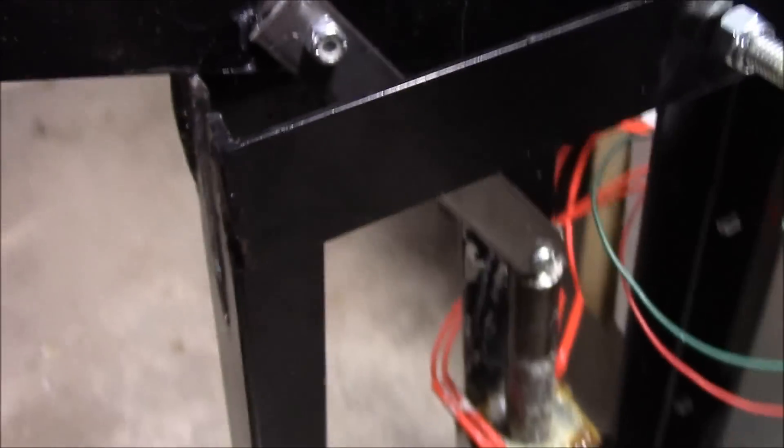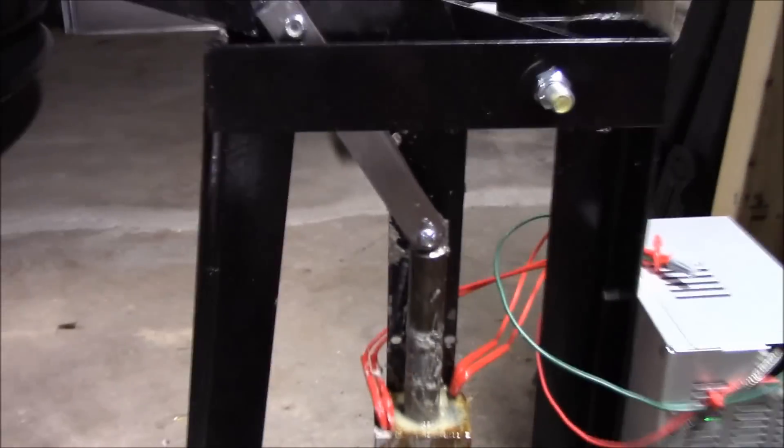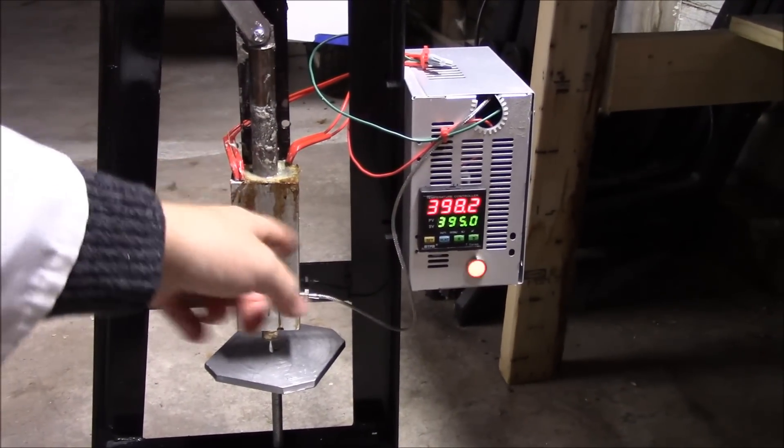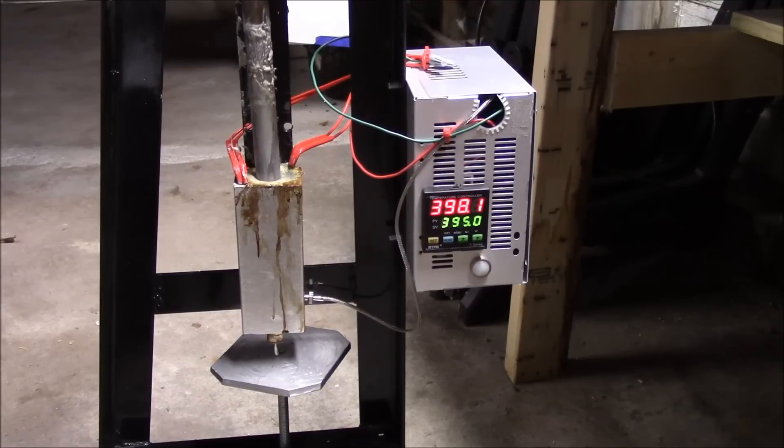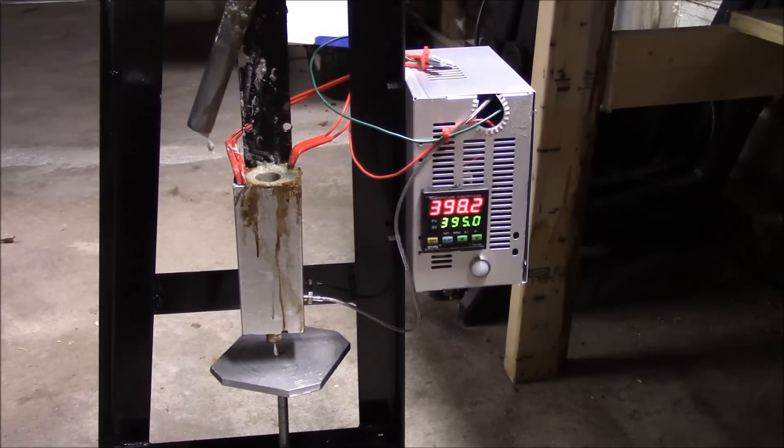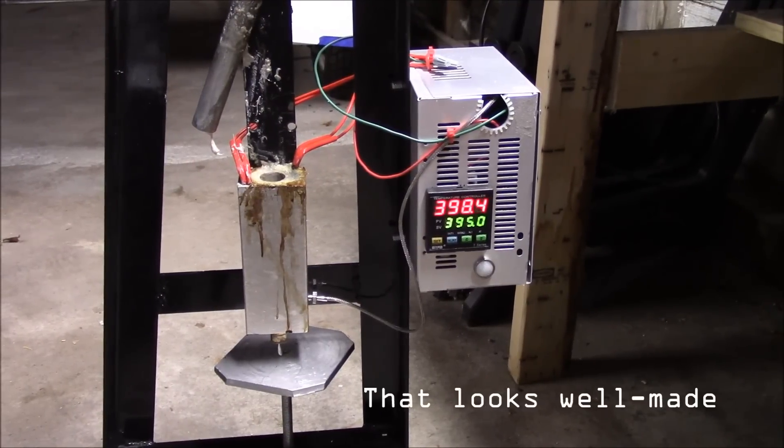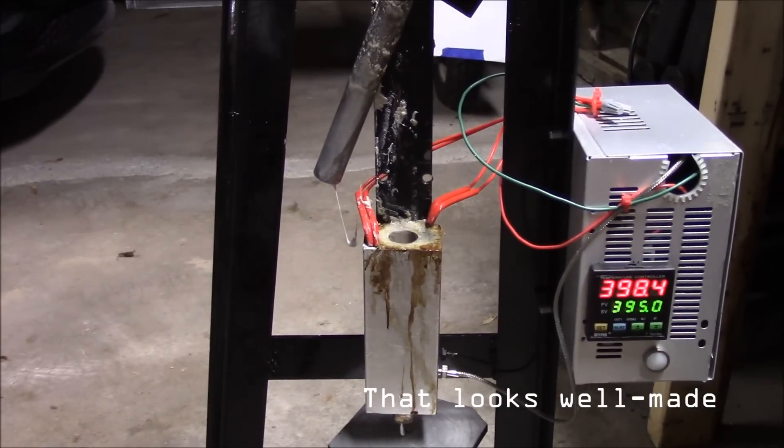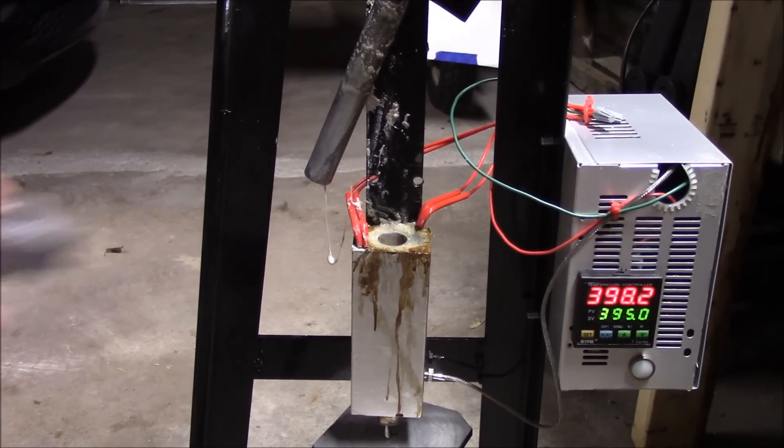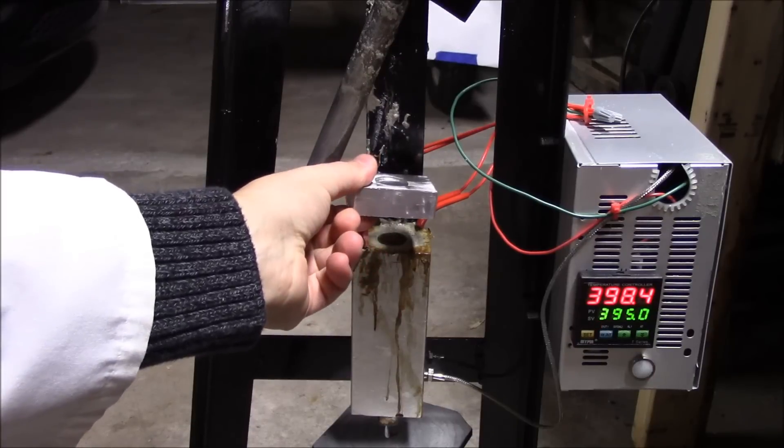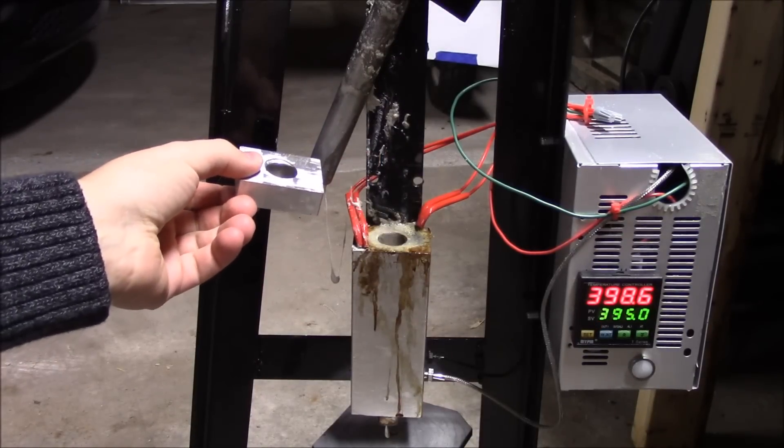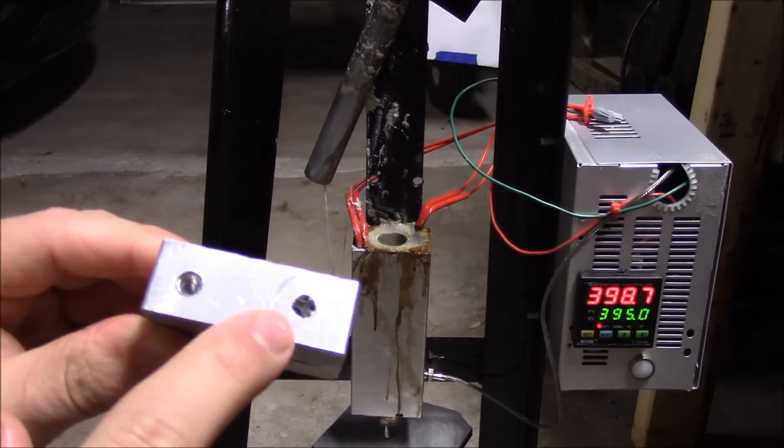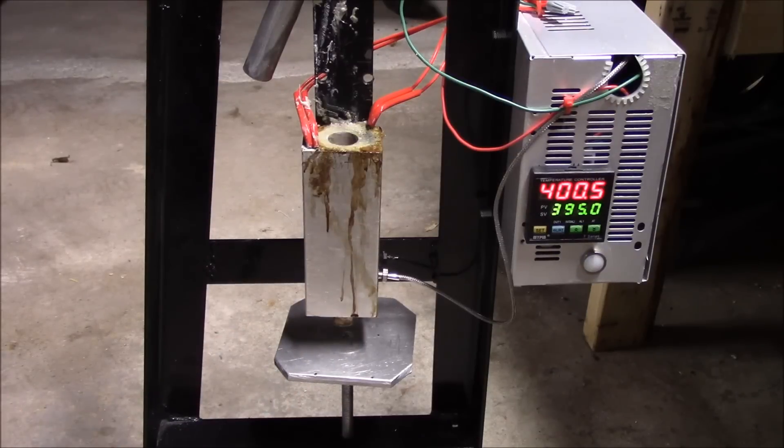With this setup, the temperature control controls the temperature of the block, and the block is what melts our plastic here. There's supposed to be another, I have the holes for it, but there's supposed to be another little piece that helps guide it that holds it right in right there so this won't move out. But I broke the tap off inside one of the holes.